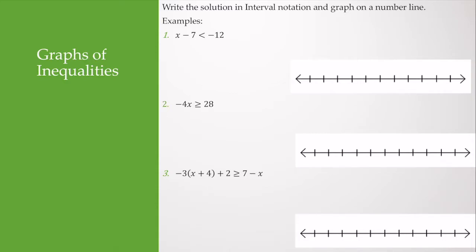Let's go ahead and write the solutions in interval notation and graph them on a number line. I have x minus 7 is less than negative 12. I'm going to add 7 to both sides, so I get x is less than negative 5.